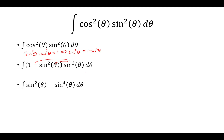Now we're going to use a trig identity. Sine squared is (1 minus cosine 2θ) over 2. For sine to the 4th, we're going to take sine squared and then square that again — basically, square this and then square that.